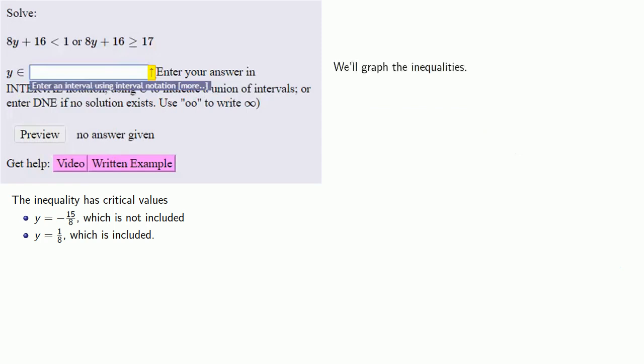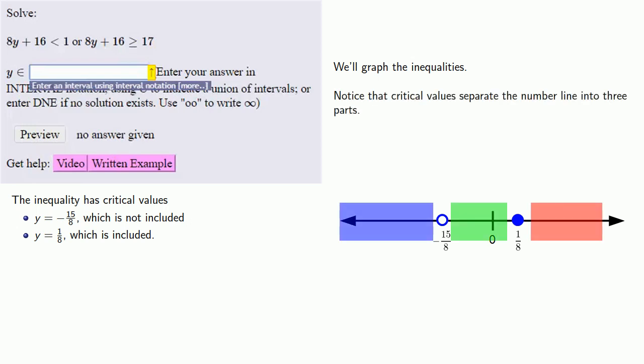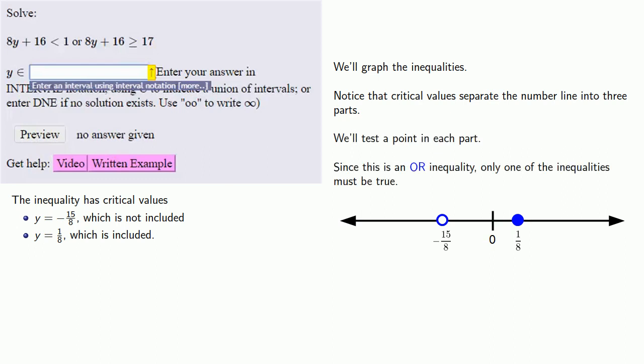Let's graph those critical values on the number line. We have our number line. Y equals negative 15 eighths is here someplace on the negative side. Y equals 1/8 is over here on the positive side. Since negative 15 eighths is not included, we'll put an open circle there. On the other hand, 1/8 is included, so we put a closed circle there. The critical values separate the number line into three parts. We'll test a point in each part. Since this is an OR inequality, only one of the inequalities must be true.